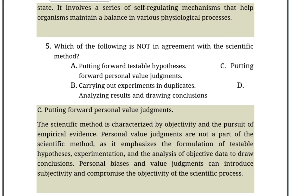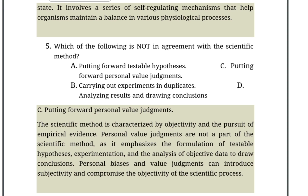Which of the following is NOT in agreement with the scientific method? A. Putting forward testable hypotheses. B. Carrying out experiments in duplicates. C. Putting forward personal value judgments. D. Analyzing results and drawing conclusions. The scientific method is characterized by objectivity and the pursuit of empirical evidence. Personal value judgments are not a part of the scientific method.